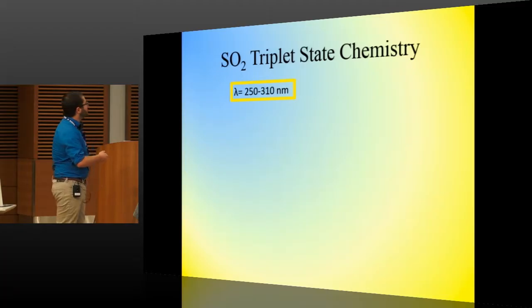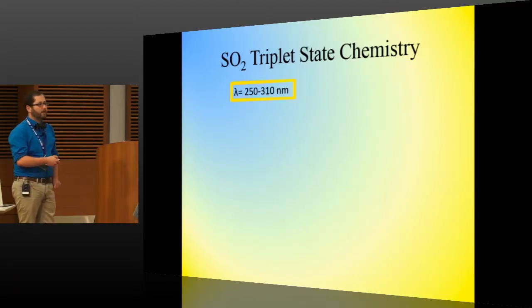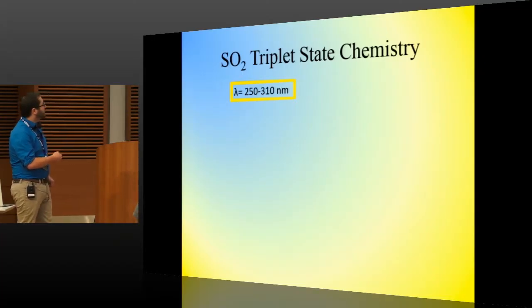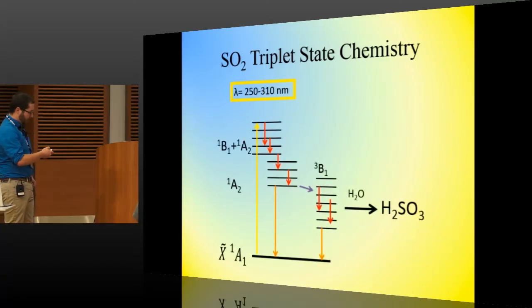So what's interesting is we want to know how do you get sulfurous acid, and how do you get up that hill to make that? And so interestingly enough, SO2 has this strong absorption from 250 to 310 nanometers in the atmosphere that's not filtered out in our atmosphere or in Venus's.